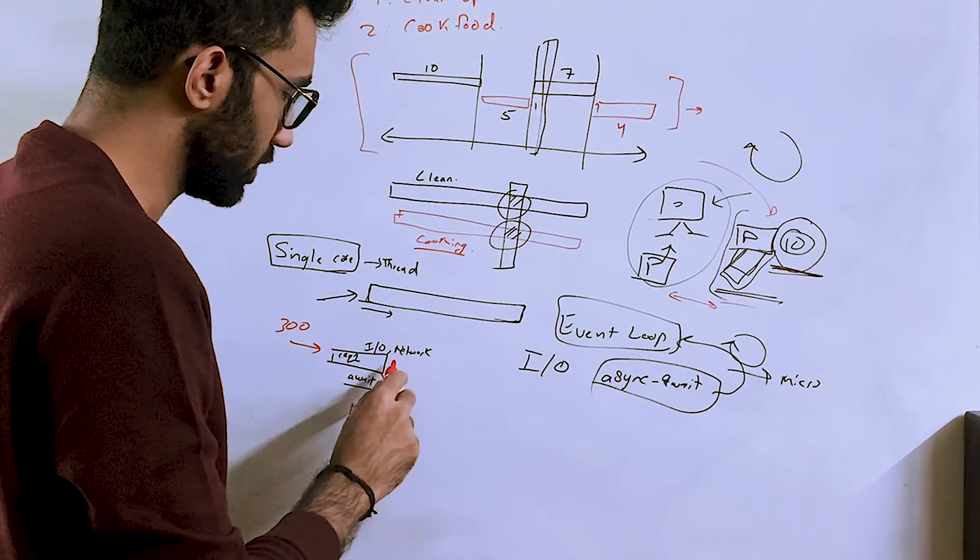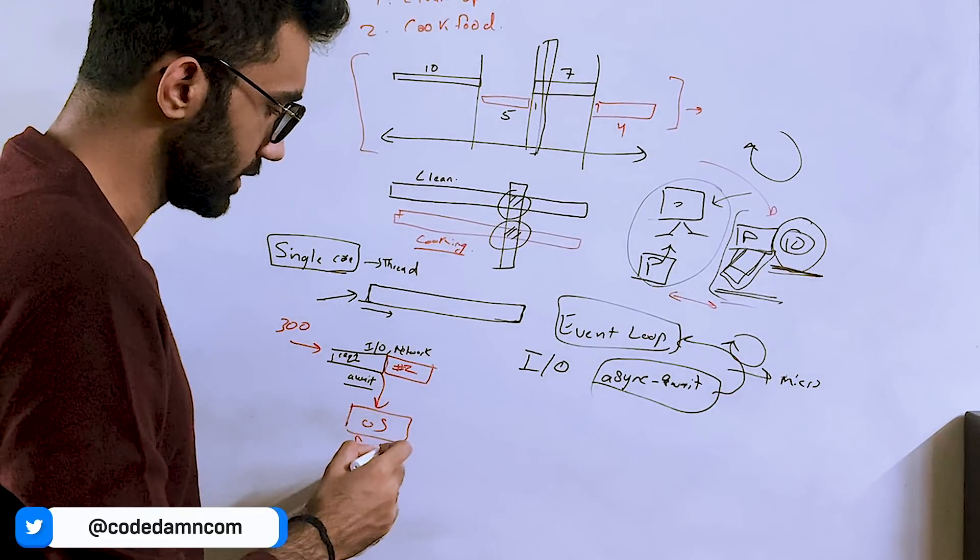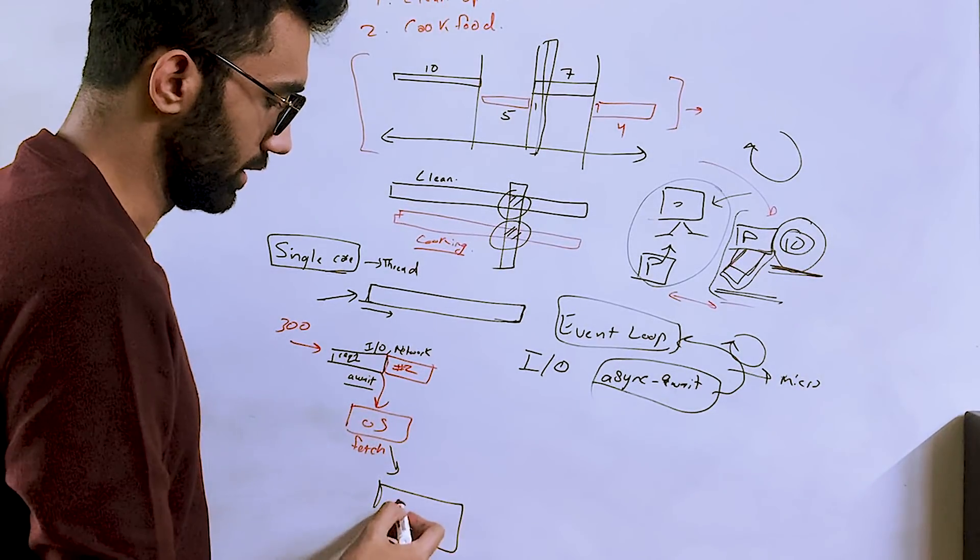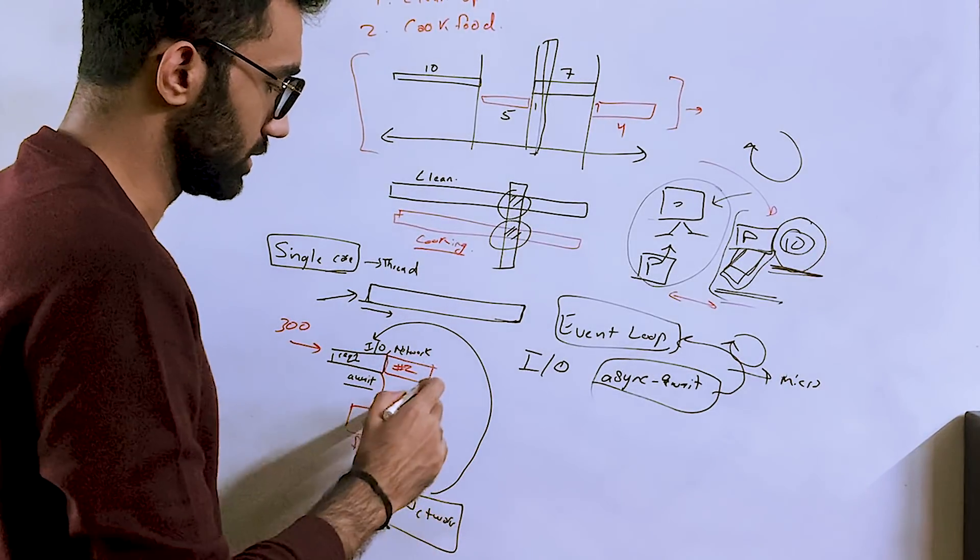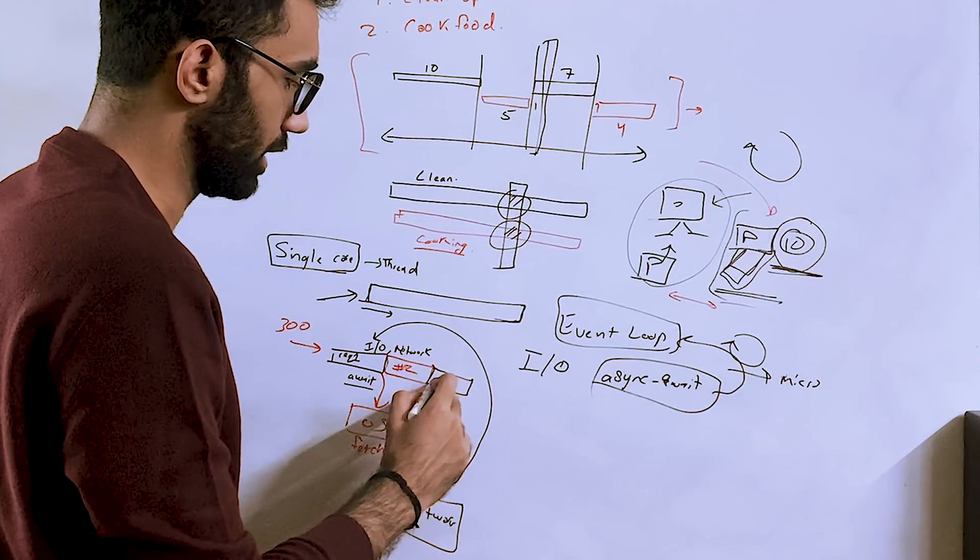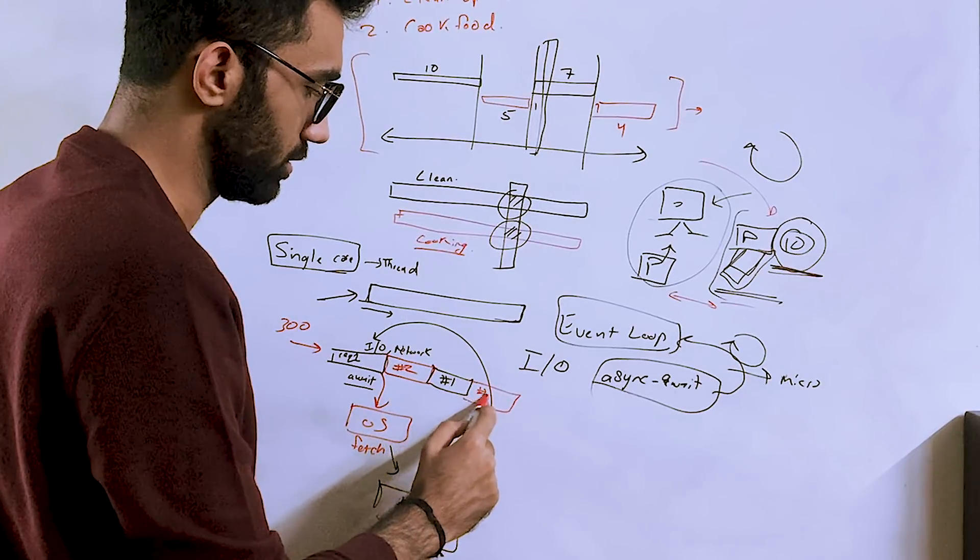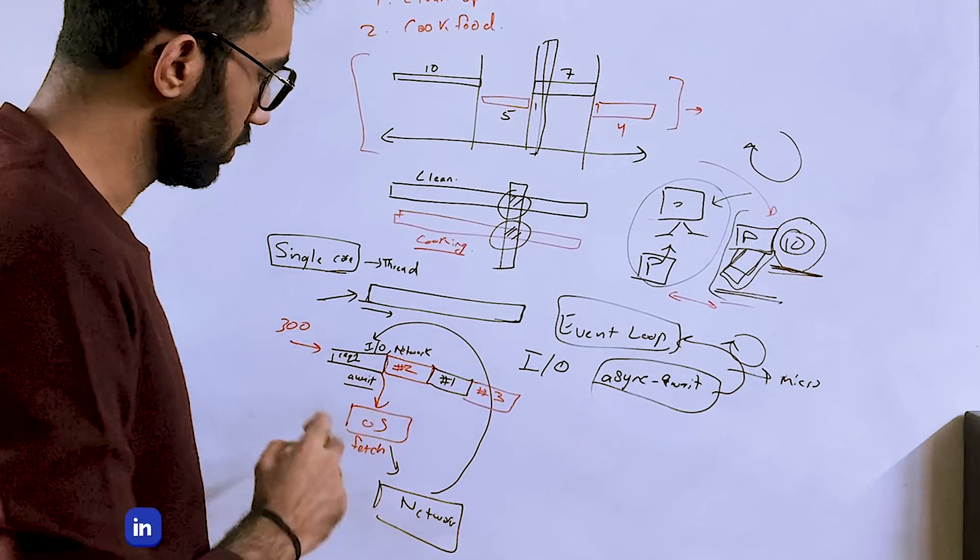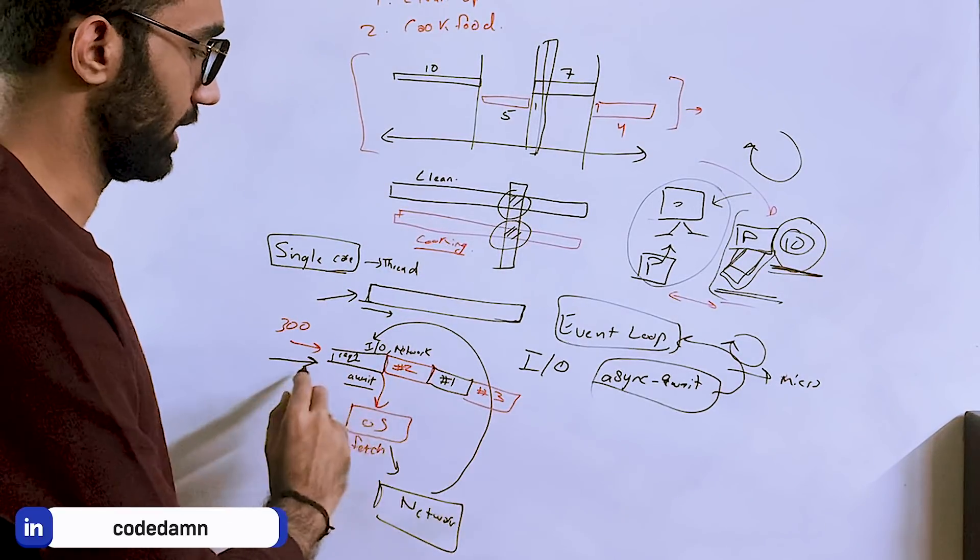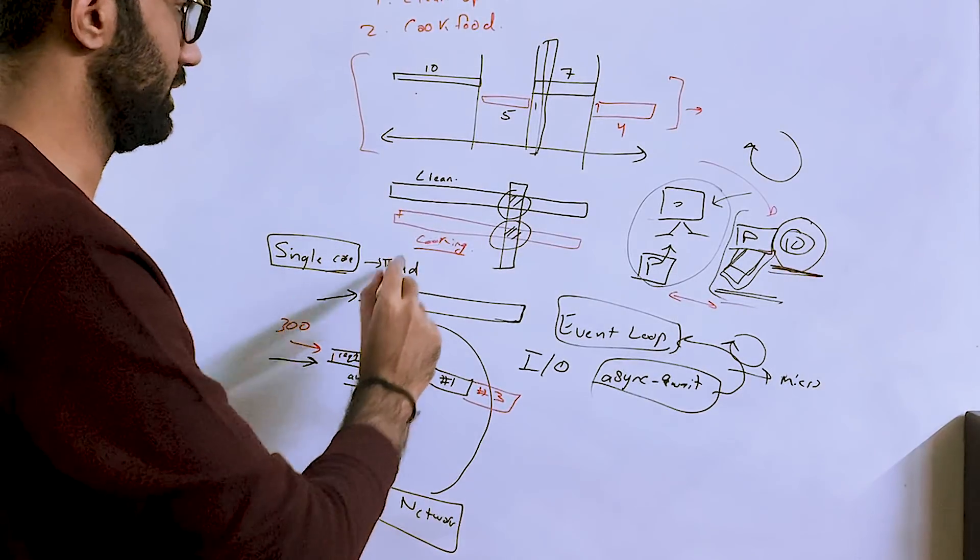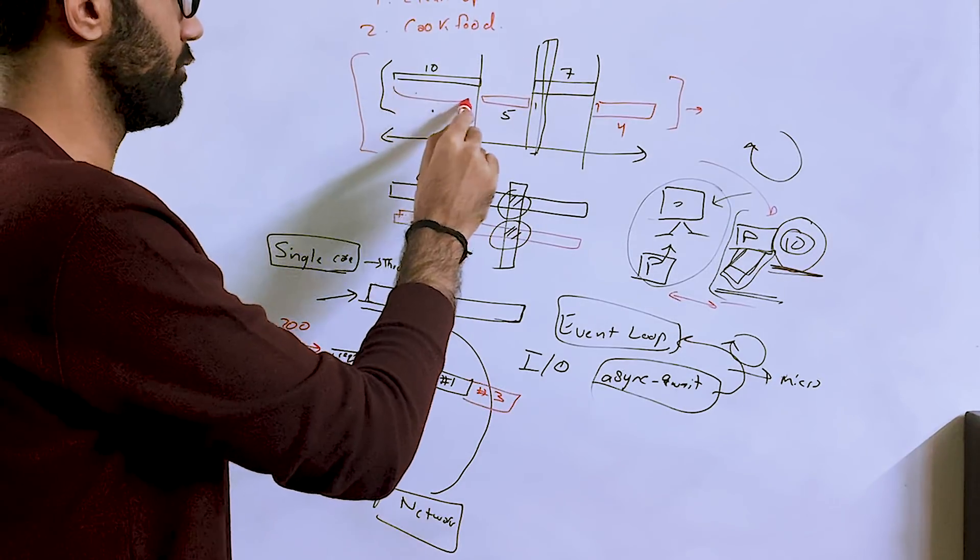It's gonna move on and start processing the other request—request number two. Meanwhile, the OS fetch performs the network request at a lower level, then gets back the result sometime later. At that time, Node.js will resume request number one. Then maybe request one is completed, but request three has arrived, so it will process request three, and so on. Although Node is single-threaded and there's no parallelism—Node is not executing requests one and two parallelly—it's basically the same concurrency model. Node achieves this concurrency by offloading a few parts to the operating system.